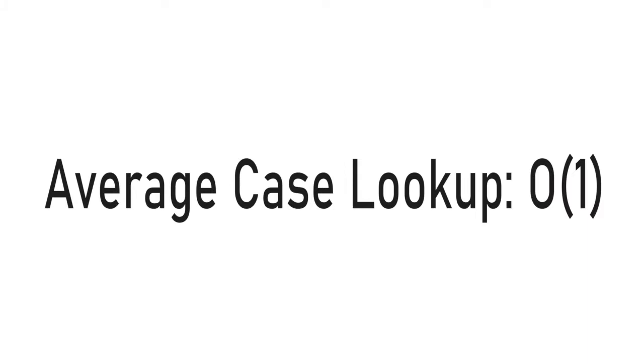This is where the average part of the complexity comes from. No hash function is perfect, but a good hash function will, on average, distribute the keys evenly. If our table has size n, that means on average our lookup will be O(1).